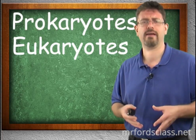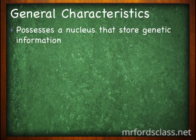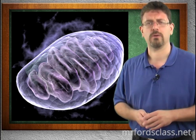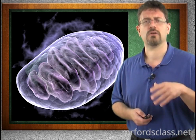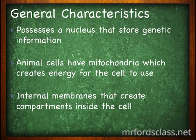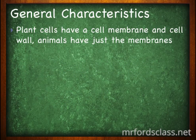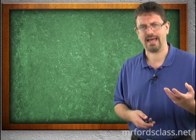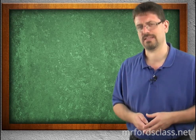Some general characteristics of eukaryotes: they possess a nucleus that stores genetic information. Animal cells will have mitochondria, which create energy for the cell to use — we'll take a look at mitochondria in the next series of videos on organelles. They also have internal membranes that create compartments inside the cell. Plants have a cell membrane and a cell wall, while animals will only have a cell membrane. They have cytoskeletons that maintain shape and help with internal transportation. In our next video, we're going to start taking a look at the structures of a cell.